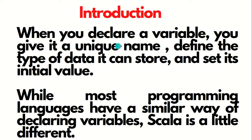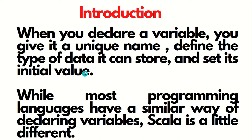How we can declare a variable in Scala and how it is different from other programming languages. When you declare a variable, we give a unique name which we call the identifier, define the type of data it can store, and set its initial value. This is how we used to do it in other programming languages.